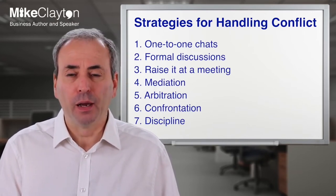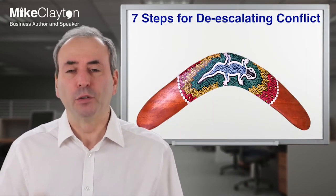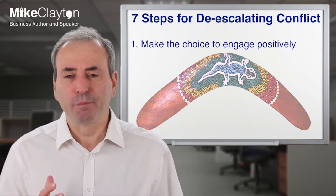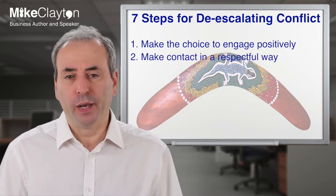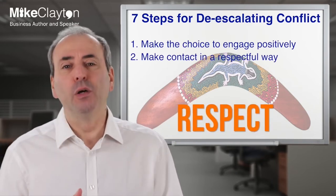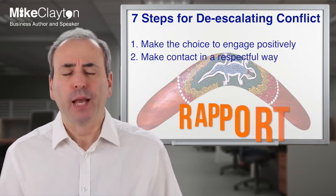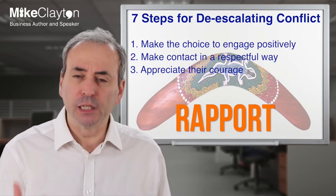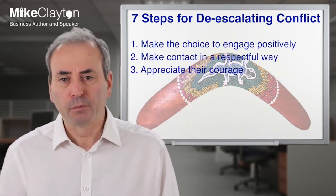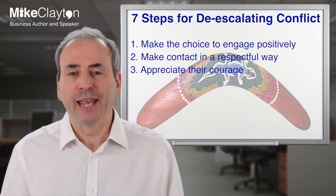So there you have seven strategies for resolving conflict — pick wisely and apply with care. Now, what are the steps for de-escalating conflict? There are seven, and they're straightforward. The first step is to make the choice to engage positively, and the second step is to make contact in a respectful way. These two steps together are about respecting the other person and recognizing that if you don't step forward and deal with it, you're not showing them the respect they deserve.